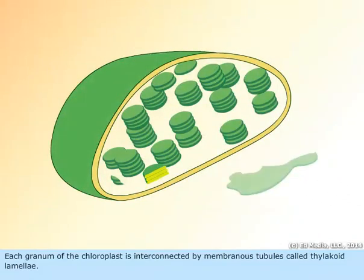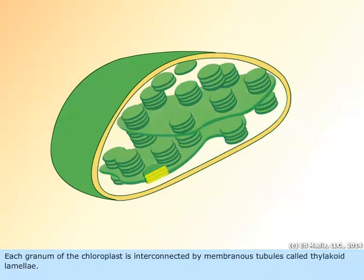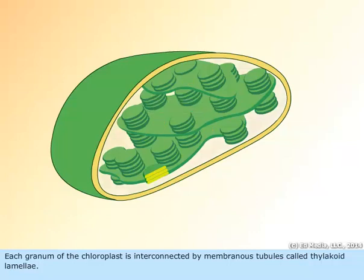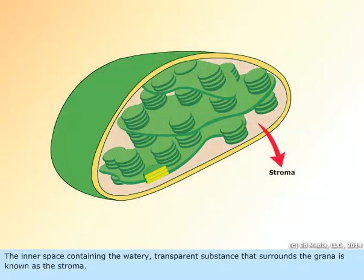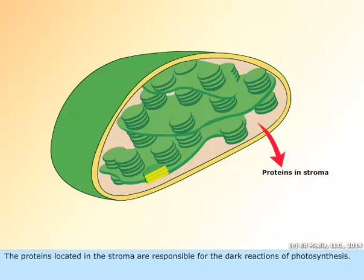Each granum of the chloroplast is interconnected by membranous tubules called thylakoid lamella. The inner space containing the watery transparent substance that surrounds the grana is known as the stroma. The proteins located in the stroma are responsible for the dark reactions of photosynthesis.